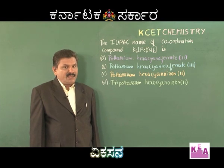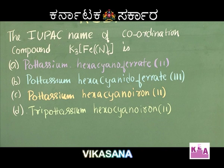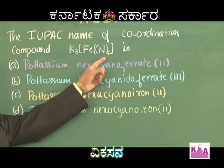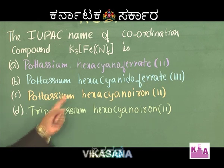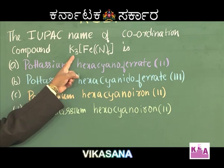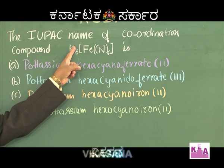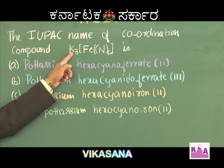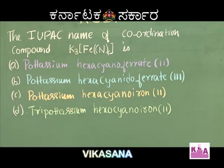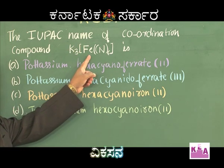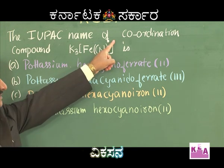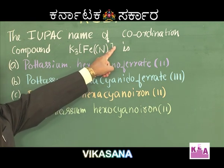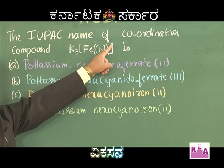Let us have one more question on coordination compounds nomenclature. The complex given here is K₃[Fe(CN)₆]. We should get the correct name for this. The cation here is potassium — all options have potassium, so we can't select based on that. Moving to the coordination sphere: when a cation is present before the coordination sphere, the complex should be an anion. As per the rules of nomenclature, its name should end in '-ate'.